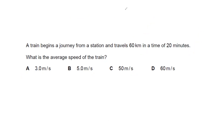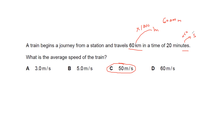The correct answer is C. Because 60 kilometers multiplied by 1000 equals 60,000 meters. Time: 20 minutes multiplied by 60 equals 1200 seconds. Average speed equals total distance divided by total time: 60,000 divided by 1200 equals 50 meter per second. So the unit conversion is important.